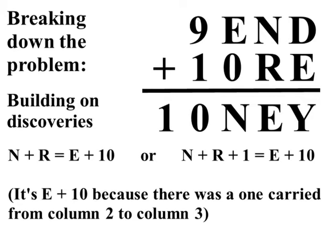Now, let's go back. We know that when we add N plus R we have to carry a 10 over or actually a 1 over to the next column. Therefore, N plus R equals E plus 10. Or, if there's carrying from column 1, lots of possibilities here. If there's carrying from column 1, N plus R plus 1 equals E plus 10.